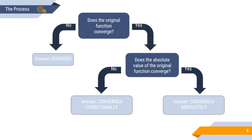As a review, the process for finding whether a series converges absolutely or conditionally: if the original series does not converge, your answer is diverges. If the original series does converge, then you determine if the absolute value converges. If it doesn't, the answer is conditionally convergent. If it does converge, then the answer is converges absolutely.